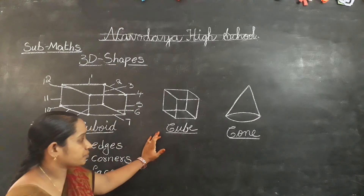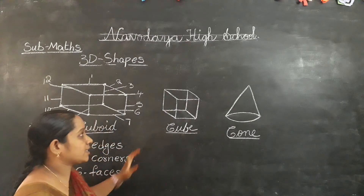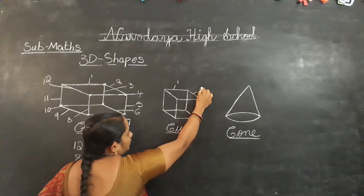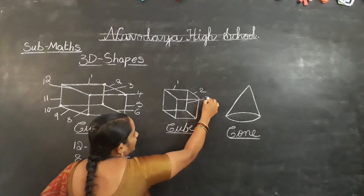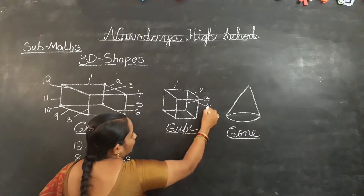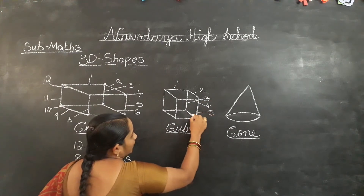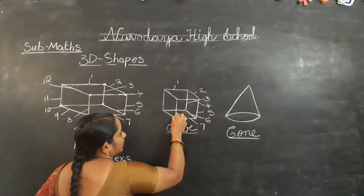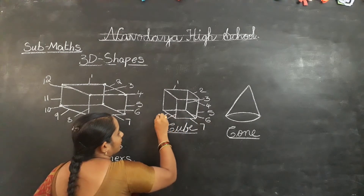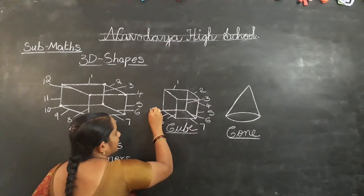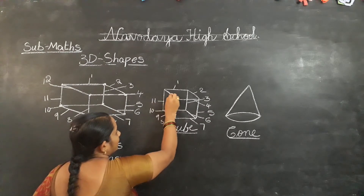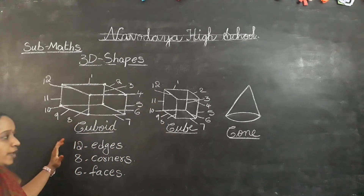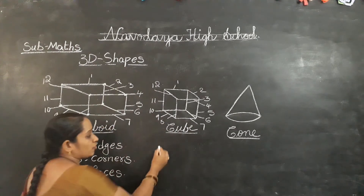Cube. Count how many edges are in a cube: 1, 2, 3, 4, 5, 6, 7, 8, 9, 10, 11, 12. Just like a cuboid, a cube also has 12 edges.